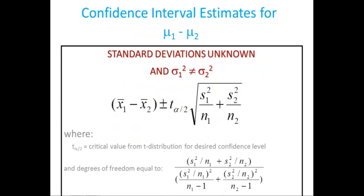For confidence interval estimates for difference of means mu1 minus mu2 when variances are unequal, we use a different formula. The most important difference is the degree of freedom: for equal variances, df = n1 + n2 − 2, but for unequal variances, degree of freedom is calculated using a separate formula. The rest of the confidence interval calculation proceeds the same way as for equal variances.